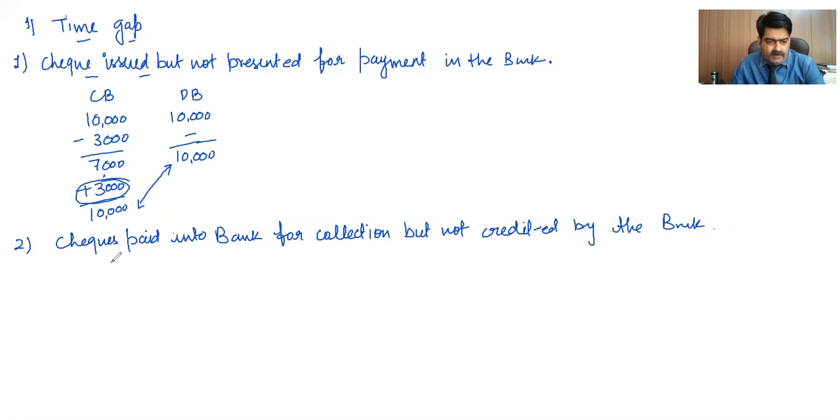So suppose on a particular date, our cash book and passbook balances are 20,000 each. And now we have received a check of rupees 5000. And we have posted that check in our cash book, as well as we have deposited that check into our bank account.